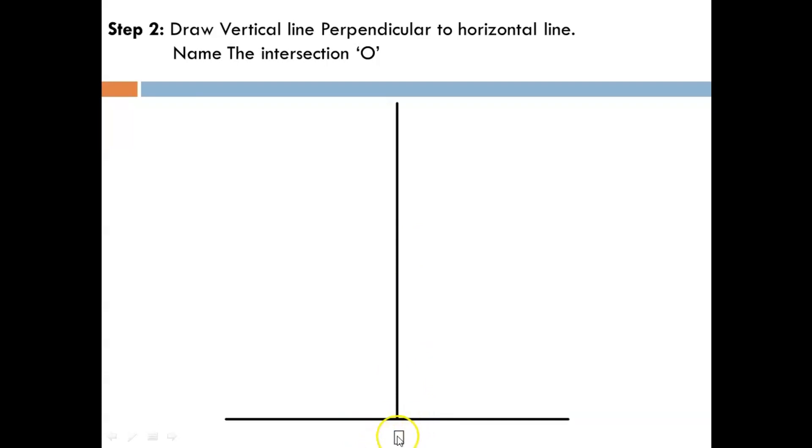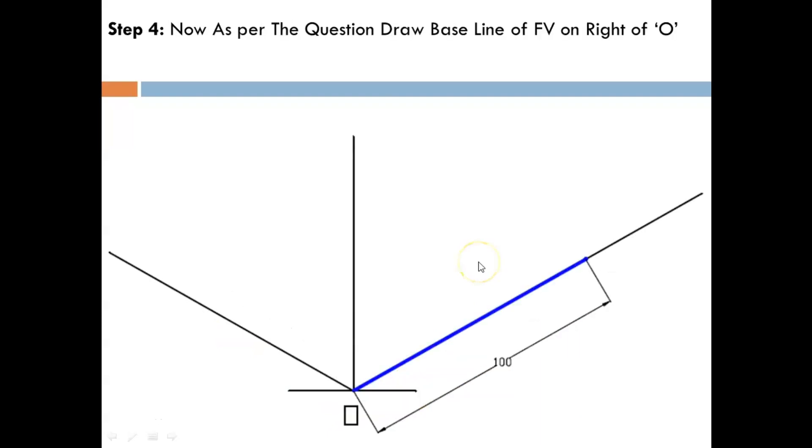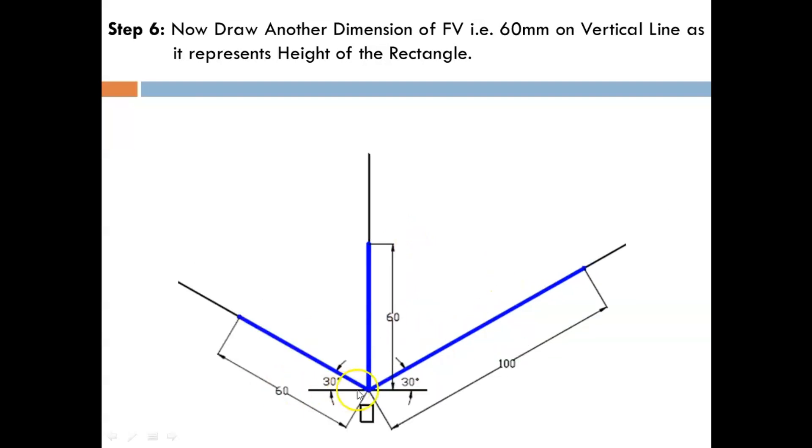The origin will decide where to place the views. Now draw 30-degree lines from the origin on both sides. Start with the actual dimensions. As per our question, the length of the front view is 100 mm, so from the origin take 100 mm. Height is 60, so from the origin take 60 mm. Considering the side view, the base is 60 mm.